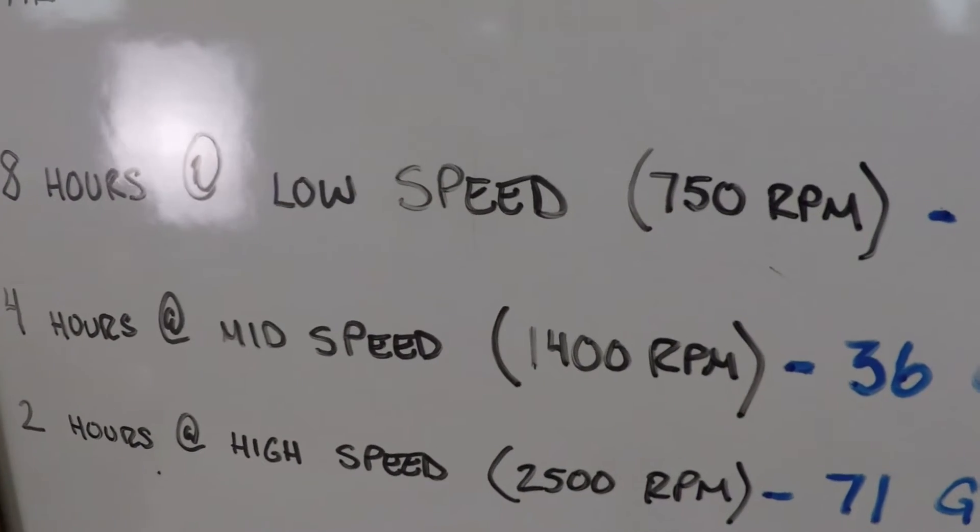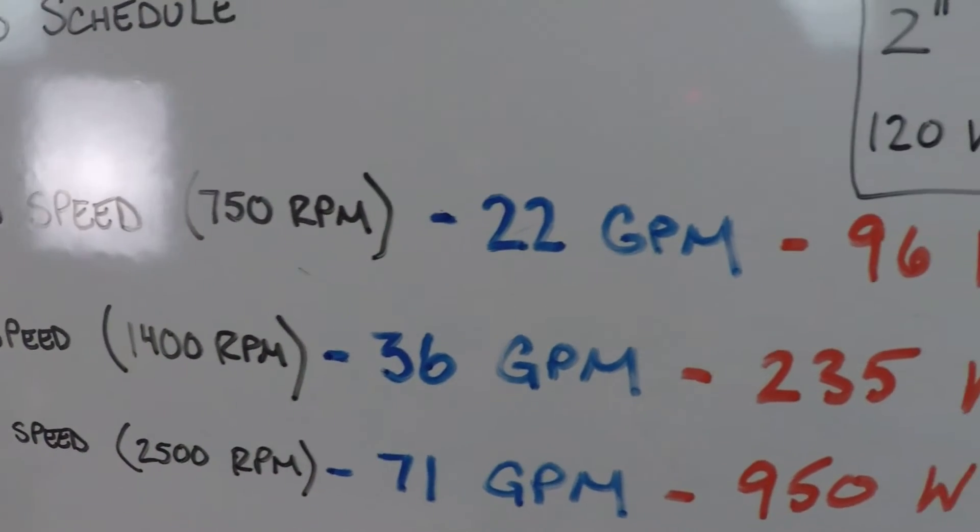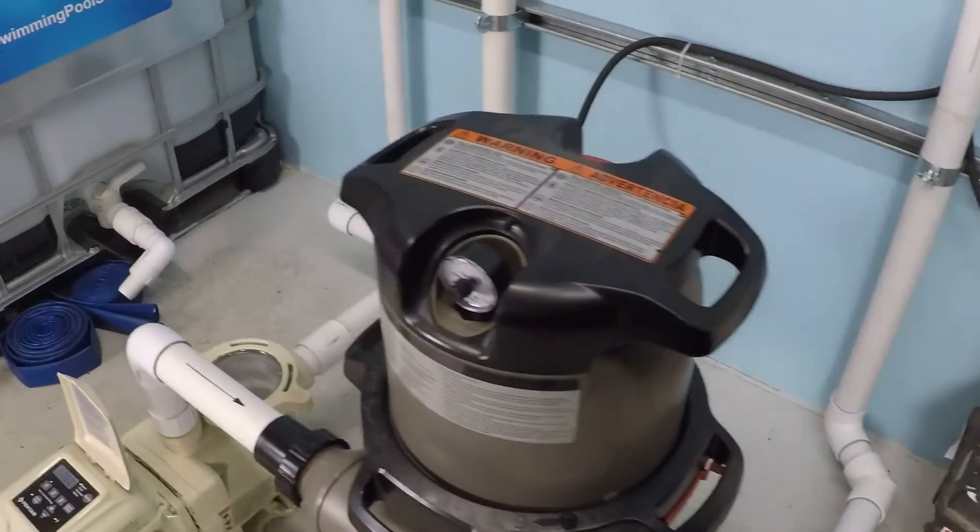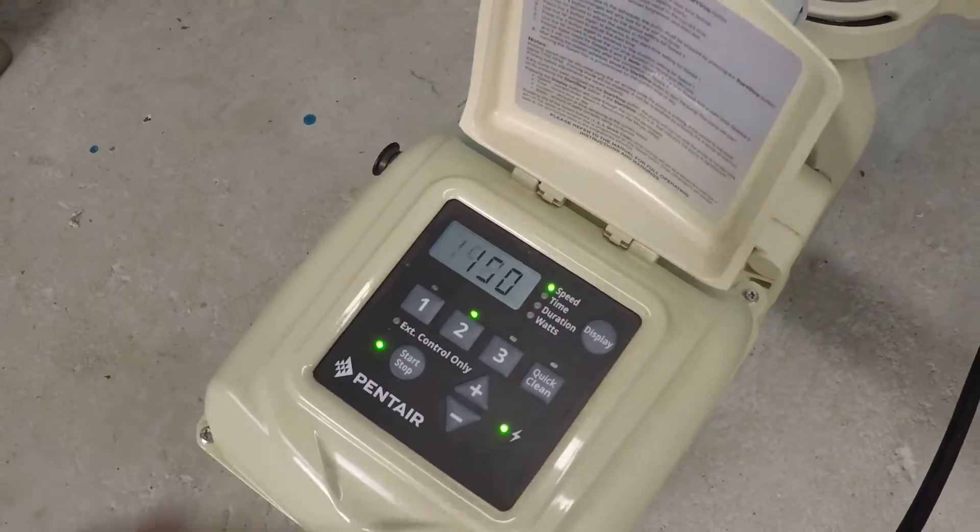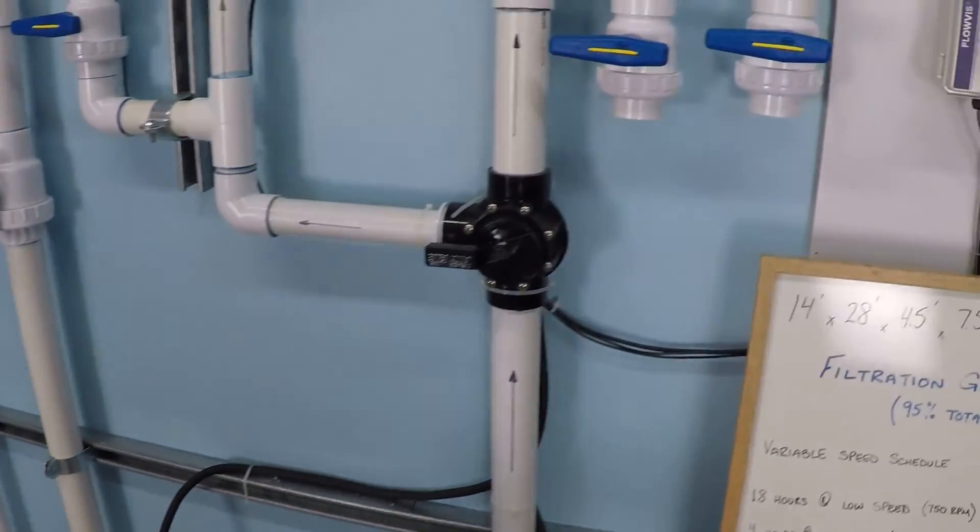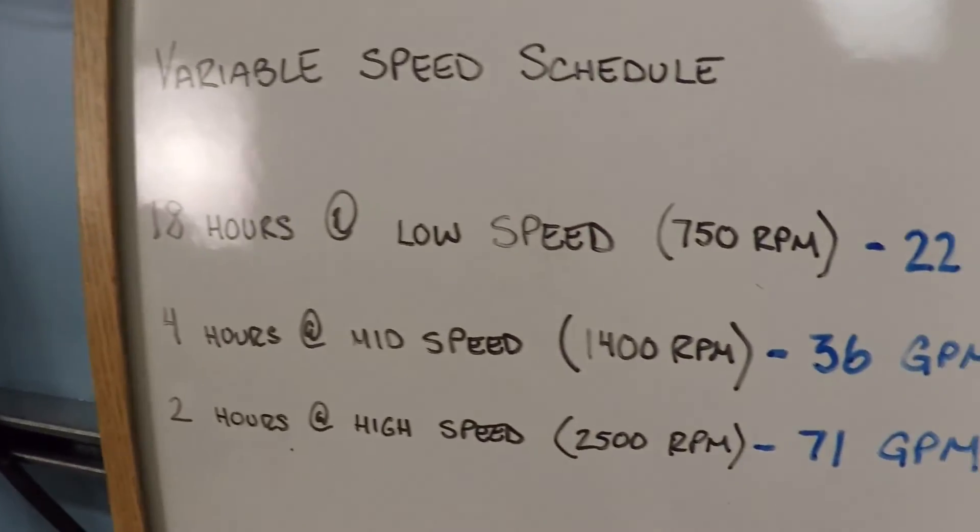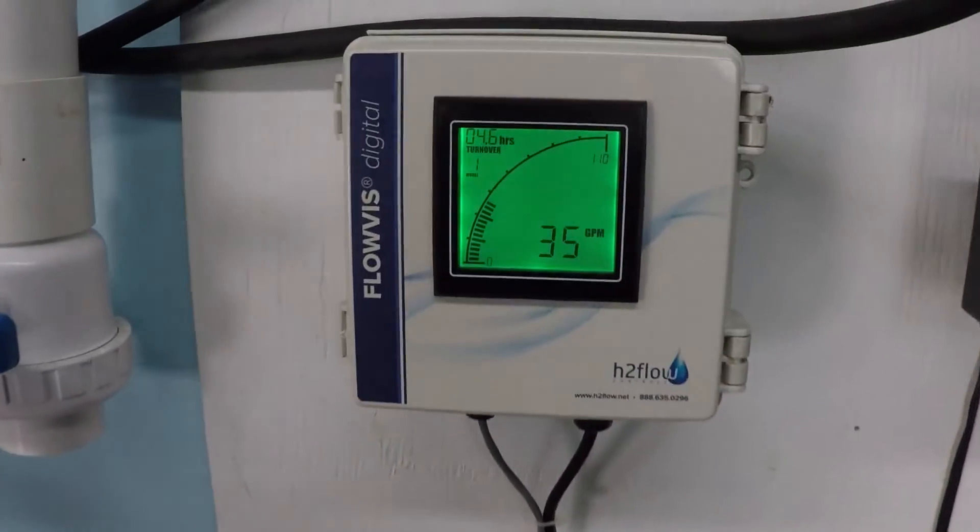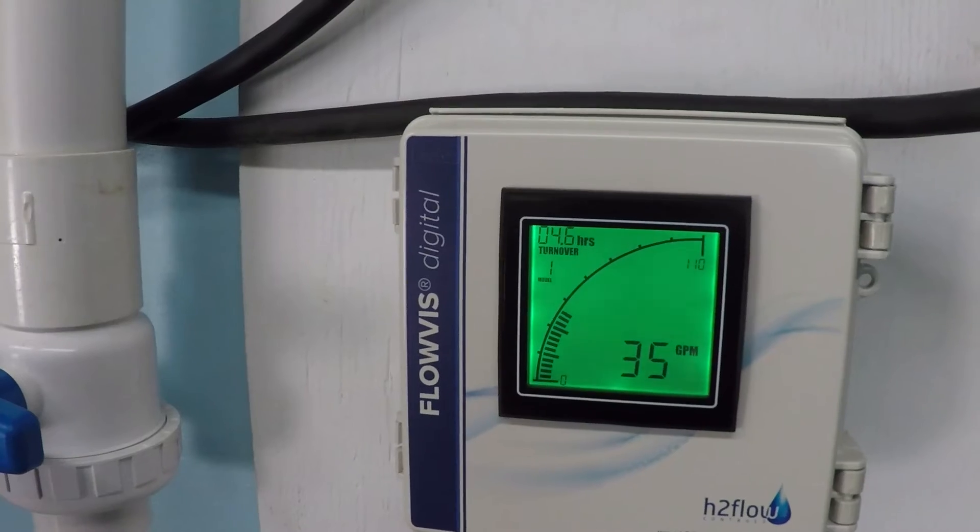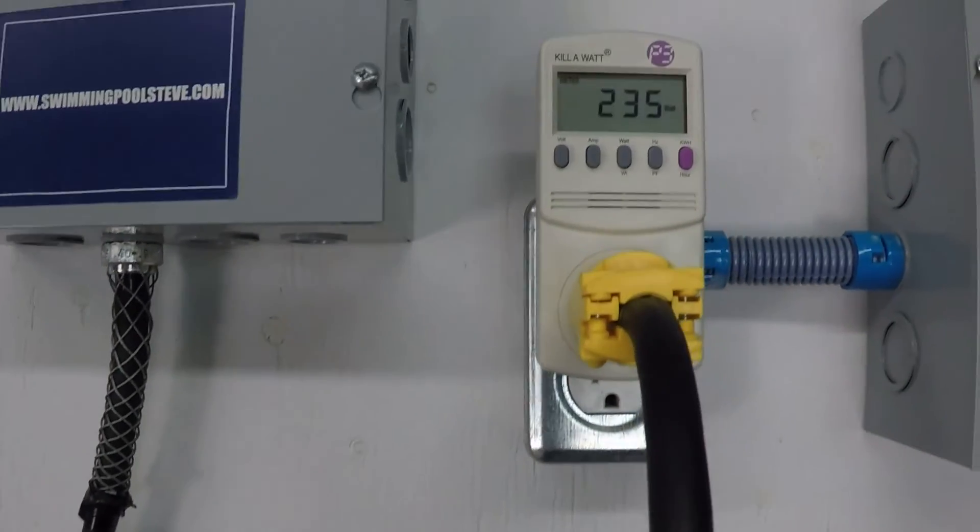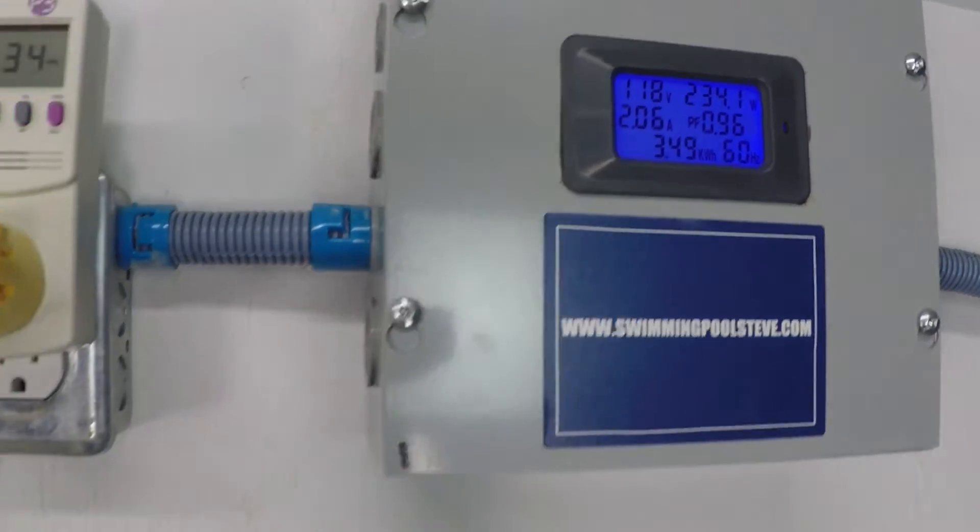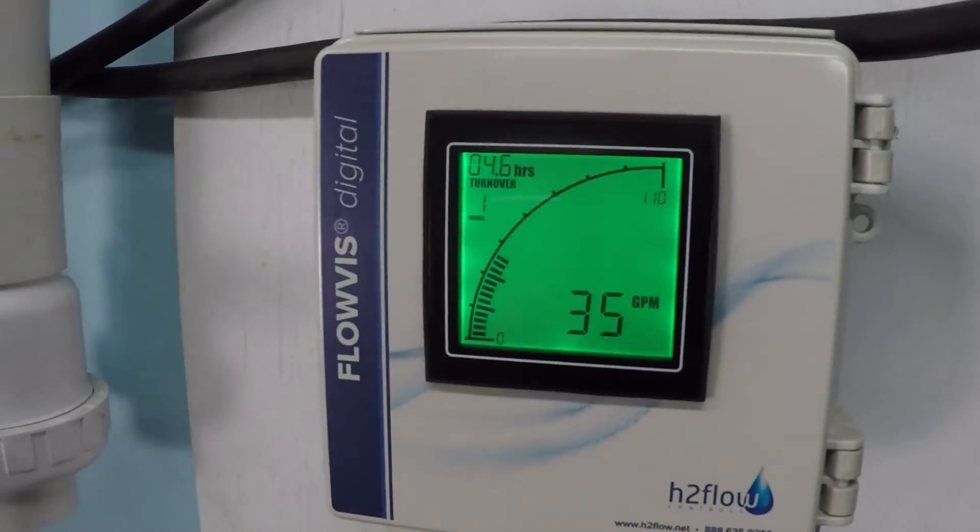So I've got the mid-speed set up for 1400 RPM, which should get us about 36 gallons per minute and consume about 235 watts of power. Let's take a look here. So 1400 RPM. And we should be about 36, 35 showing right now. Sometimes it'll flip back and forth a little bit. Check back with that in a sec. 235, 234 watts power consumption. 35 still.